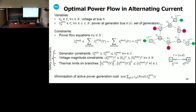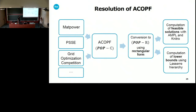The optimal power flow is typically a polynomial optimization problem with complex variables, and we can tackle this problem with our modules. We can build an optimal power flow problem from different entry formats, so it's really modular. We can adapt to different entry formats and consider the network elements, variables, constraints, and costs we want. Once we have a polynomial optimization problem with complex numbers, we can convert it into real numbers using rectangular form in order to solve it. Then we can compute feasible solutions with AMPL and Knitro, and compute lower bounds using the LASER hierarchy and Mosek.